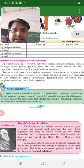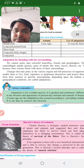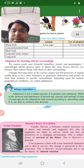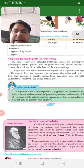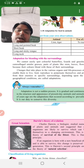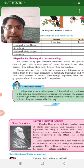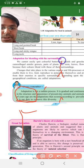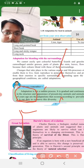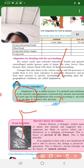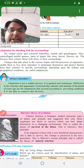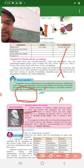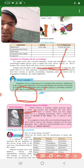Changes that take place in the various organs and life processes of organisms that enable them to live, feed, reproduce, to perpetuate themselves and protect themselves from their enemies in specific surroundings, depending upon the habitat and its geographical conditions, are called adaptations. Toh adaptation ki jo definition hai, woh starting mein humne ek baar padha tha, aur yahan pe bhi ek baar hai. Toh changes are rahe, kis mein changes are rahe - organisms mein changes are rahe, aur organism ki life processes mein changes are rahe.